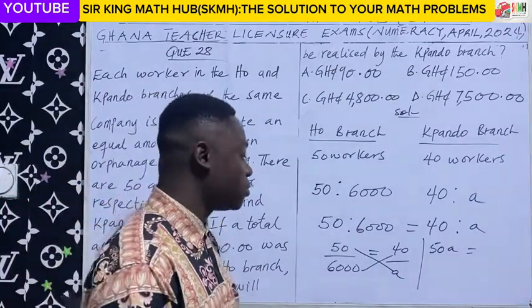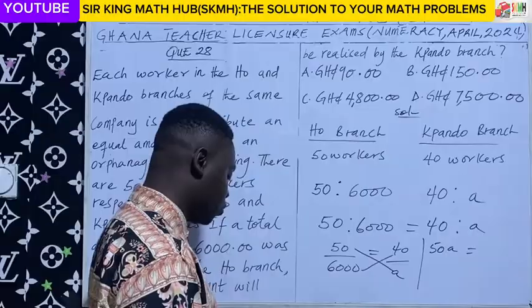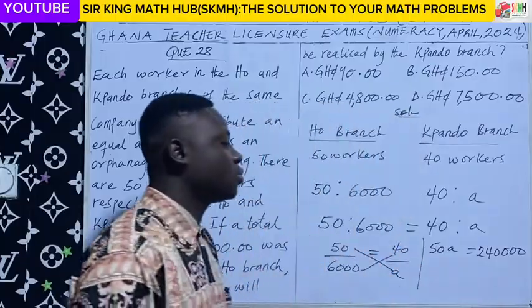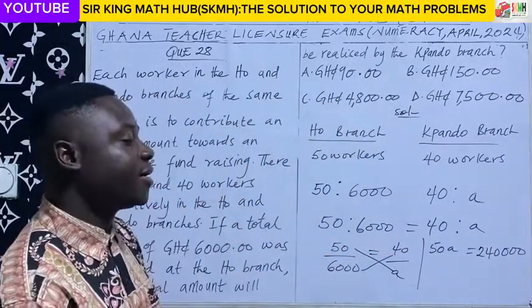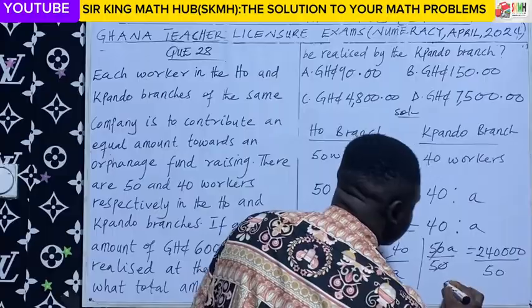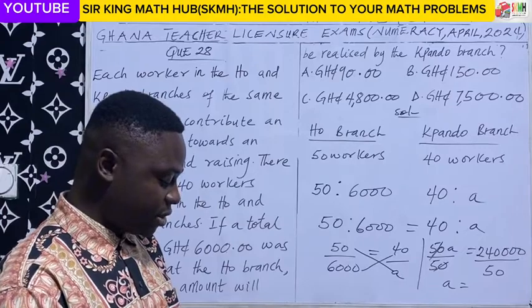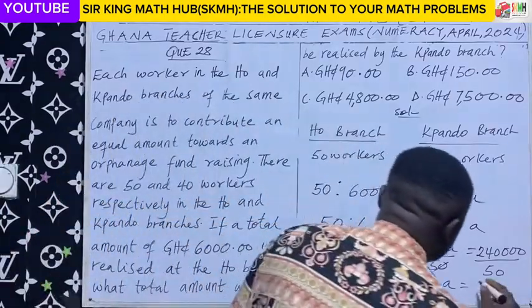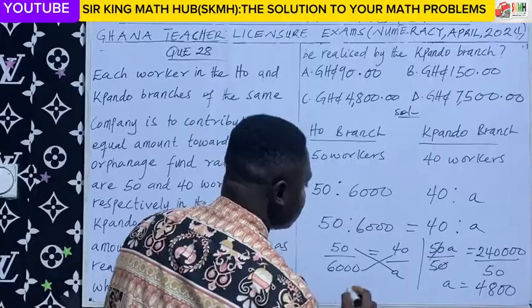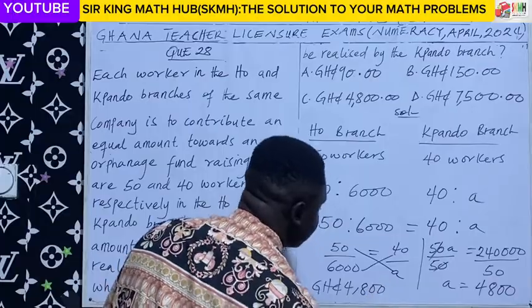During the exams, calculators are allowed, so I will encourage you to use the calculator. So 6,000 times 40 gives 240,000. We are looking for A, so we can divide both sides by 50. So 50 will cancel out, leaving A is equal to 240,000 divided by 50, which gives us 4,800. Since we are looking for an amount, we need to include the units — so that should be 4,800 Ghana cedis.